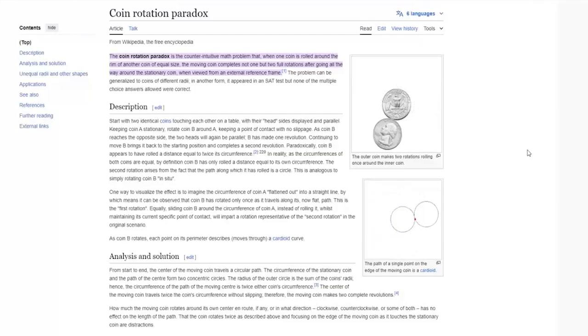The alternate version of this problem is the coin rotation paradox, in which if you have two identical coins and one coin rolls over the other coin, while the intuition says it should roll once, the mathematics says that it is going to rotate twice when it reaches its original position.